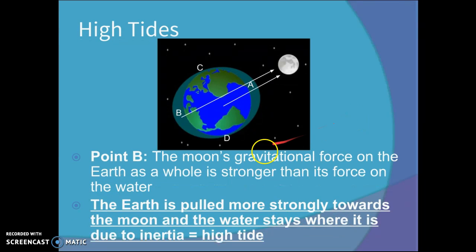Point B, the Moon's gravitational force on the Earth as a whole is stronger than its force on the water. Which means it's pulling the Earth this way while the water is kind of left behind on the other side.